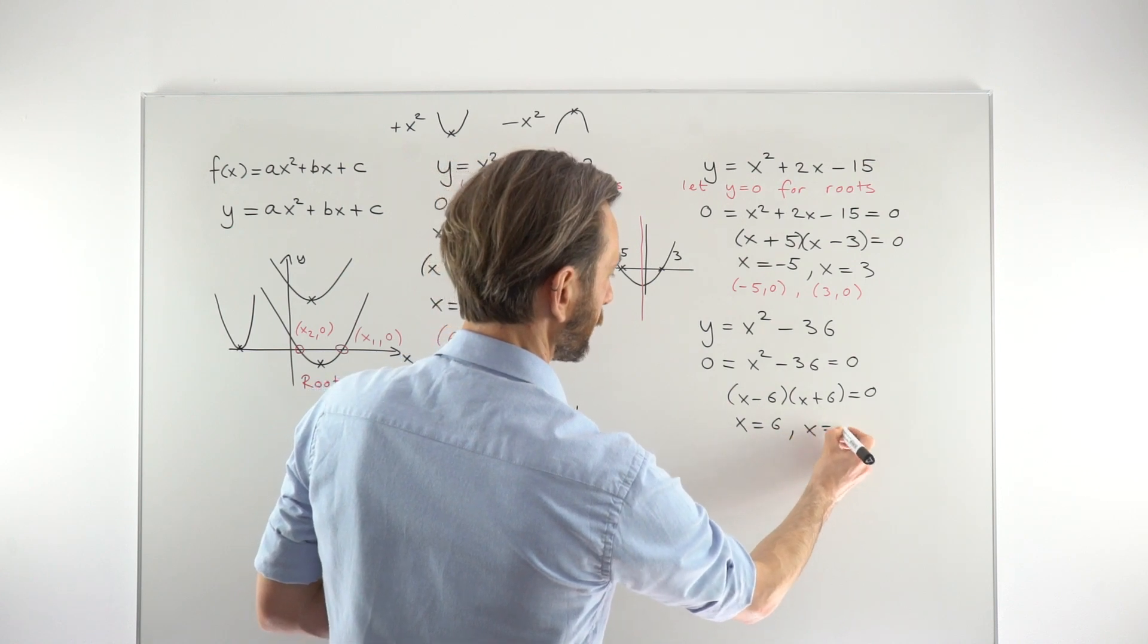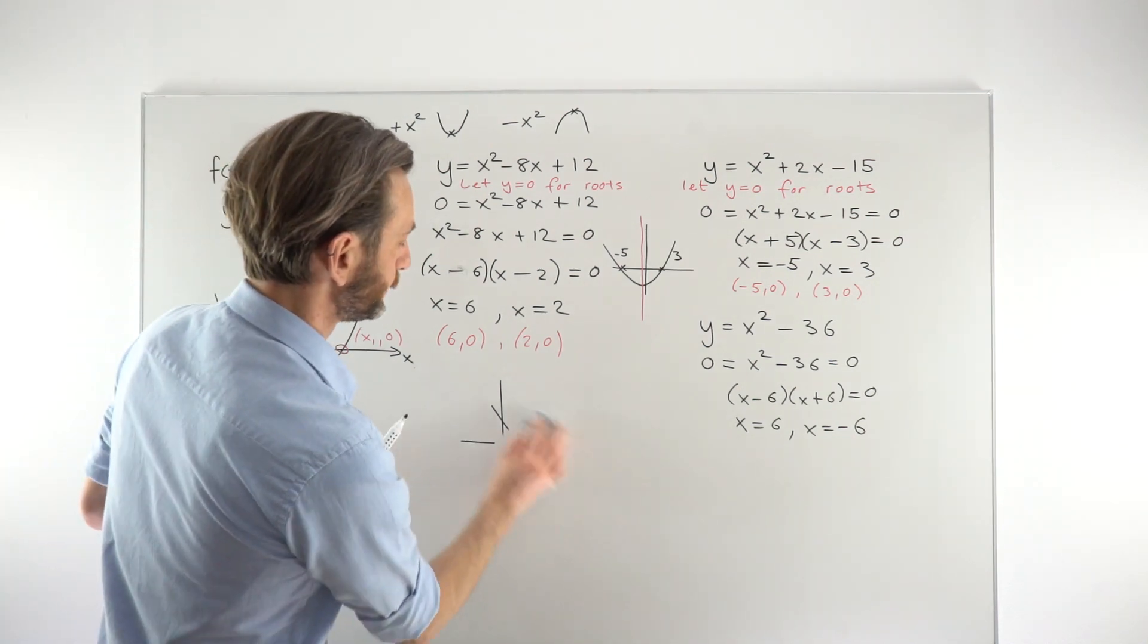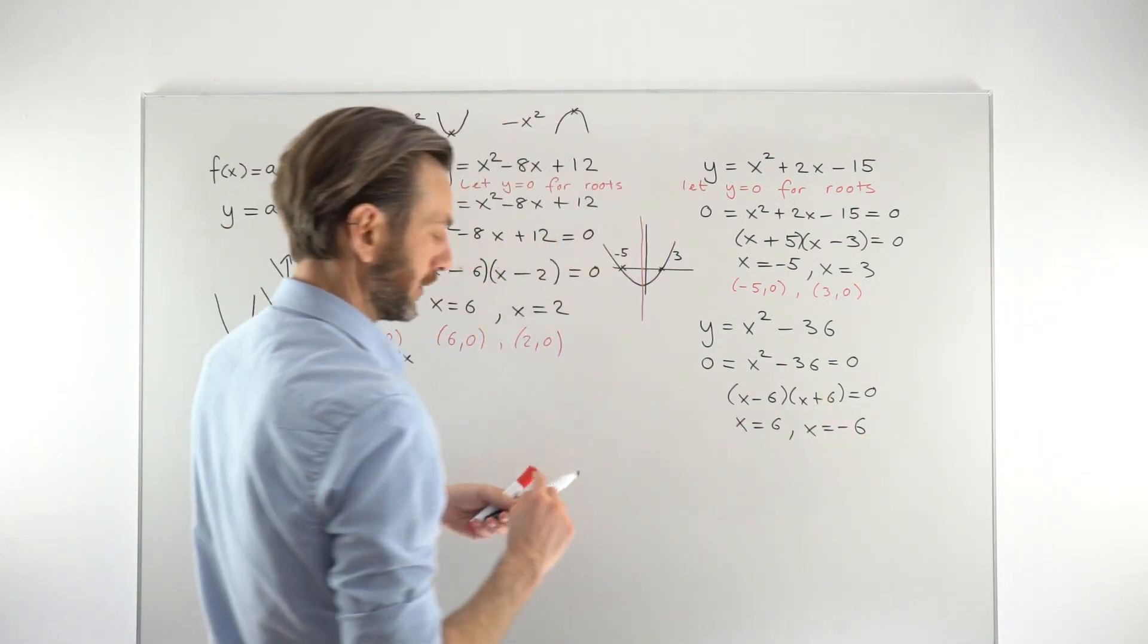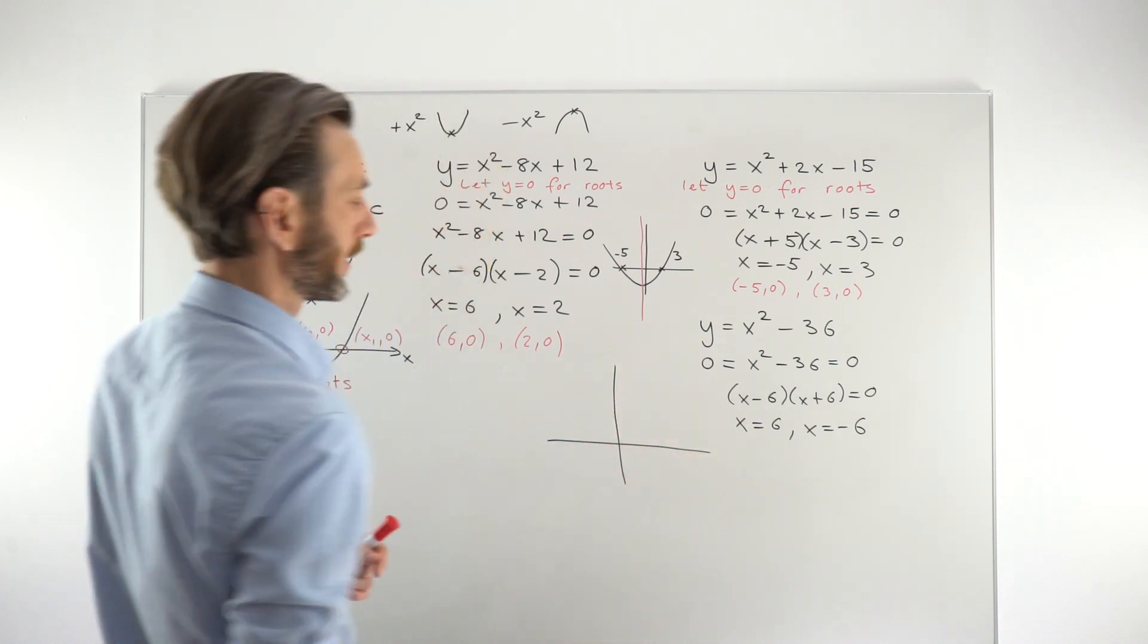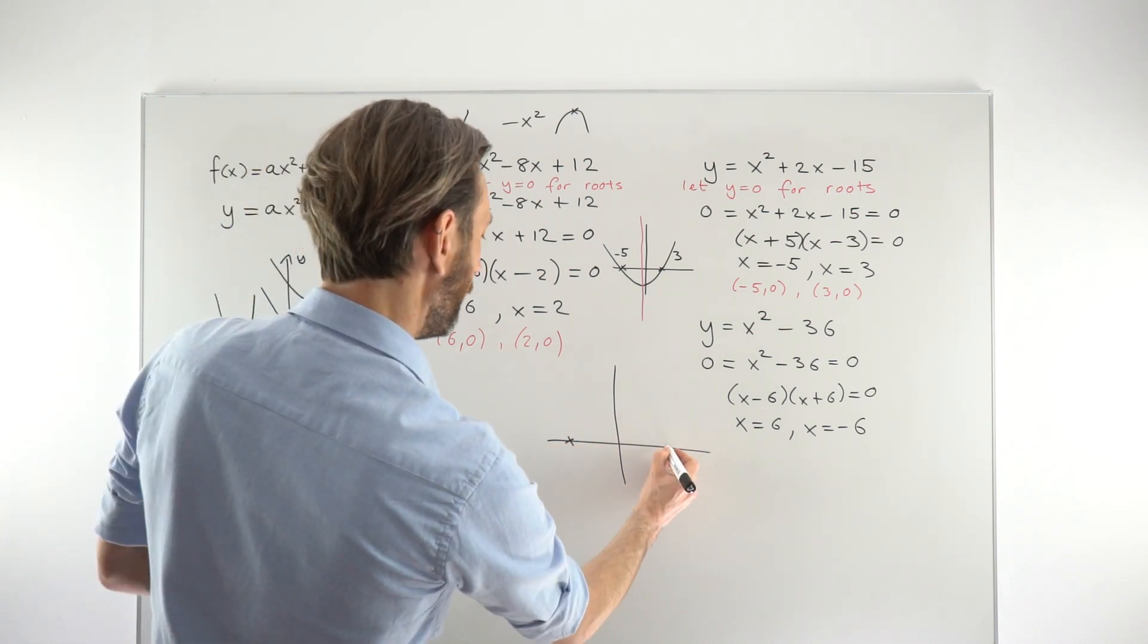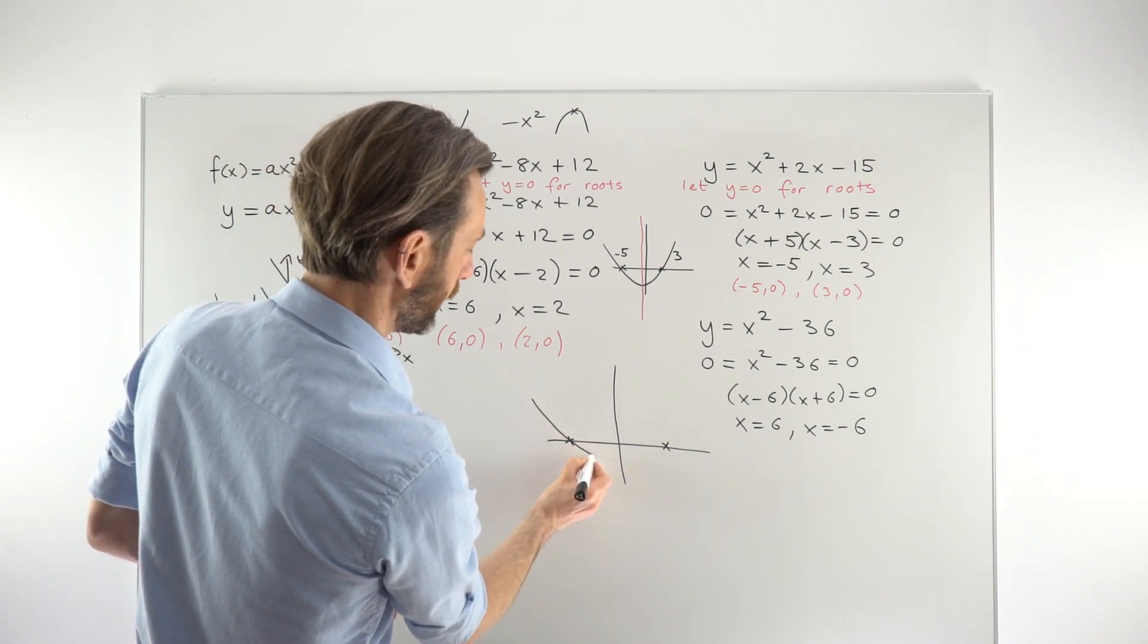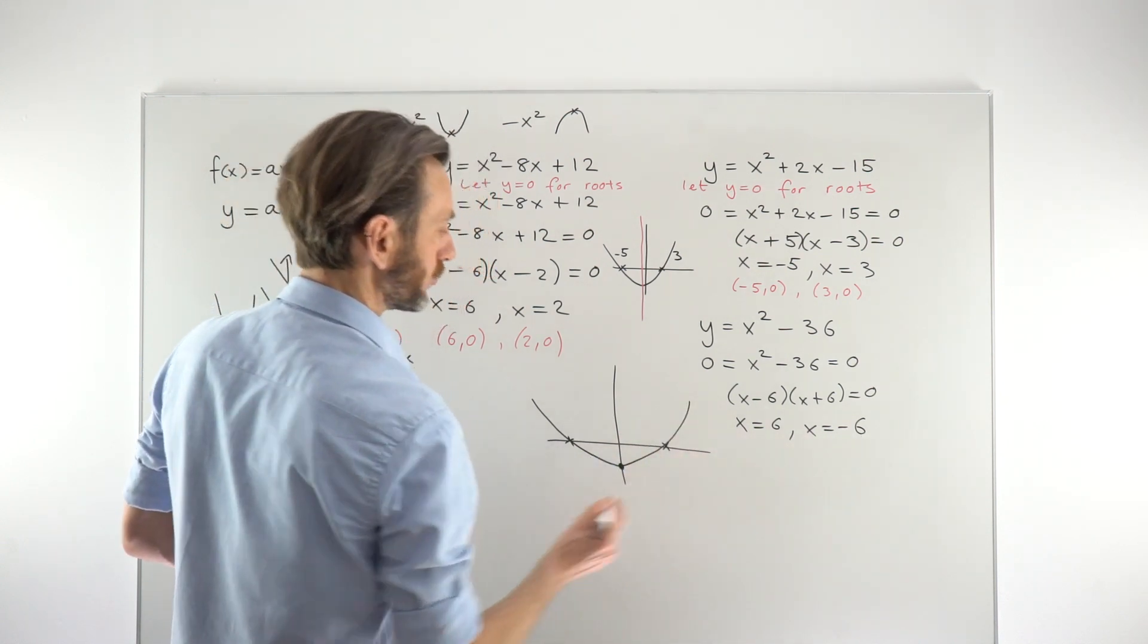These ones are quite interesting in terms of the graph because when you factorize a difference of squares, you always get the same number but with a different sign. So that means that when you solve for the roots, you get the same number but with a different sign as well. So that means that when we come to plot them, they're going to be symmetrical around the y-axis. Negative 6, let's pretend that's like here. Positive 6 is going to be the same distance over the other way. And then the parabola would have to go straight down through the middle there. So this one will have its turning point right on the y-axis.